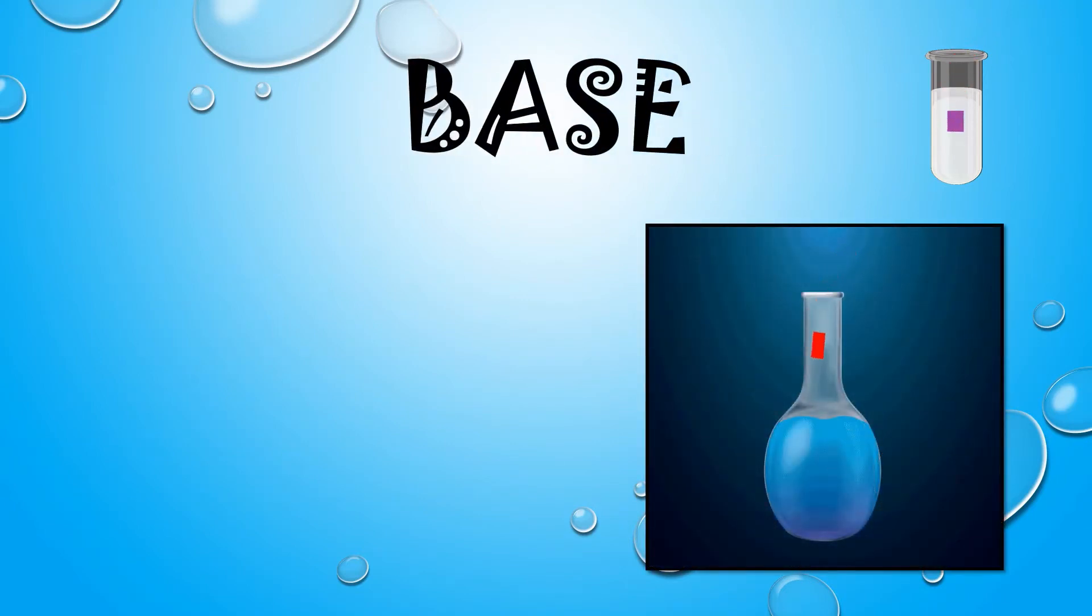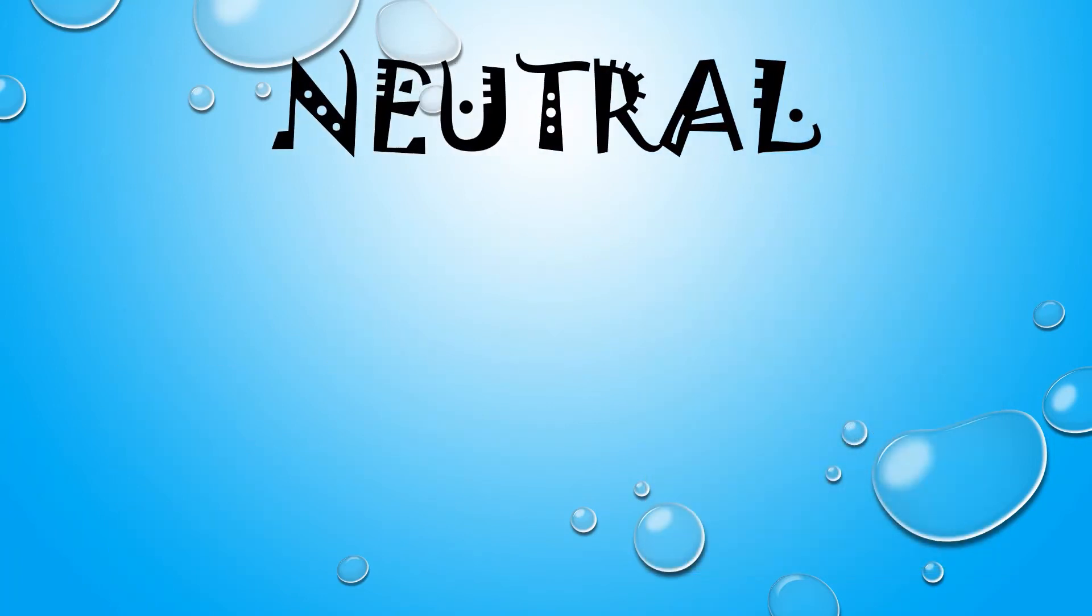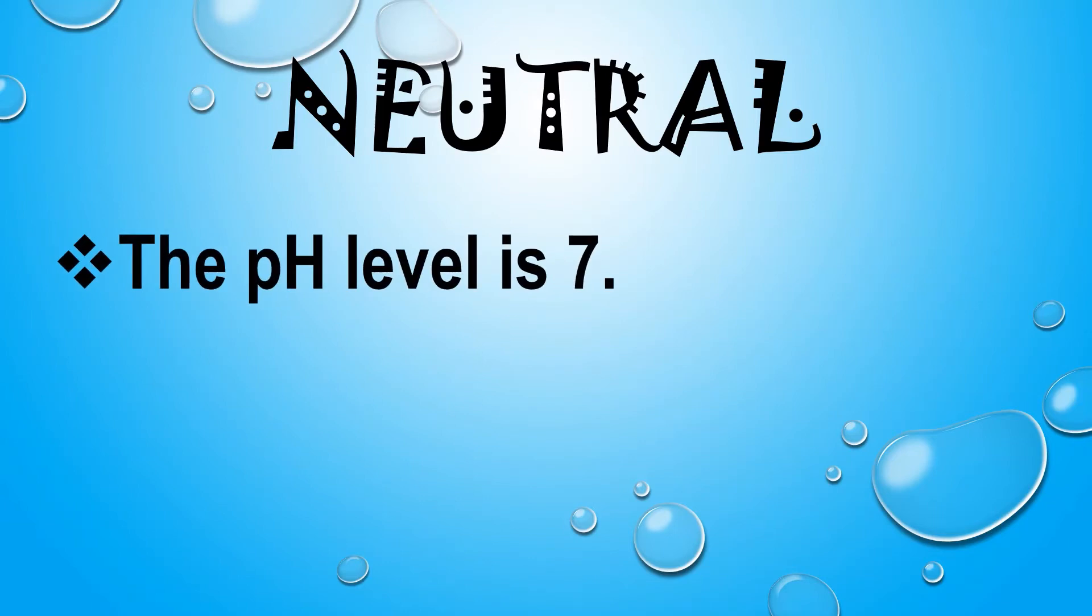It changes from red to blue litmus paper. The pH level of neutral is 7 and the common example is water.